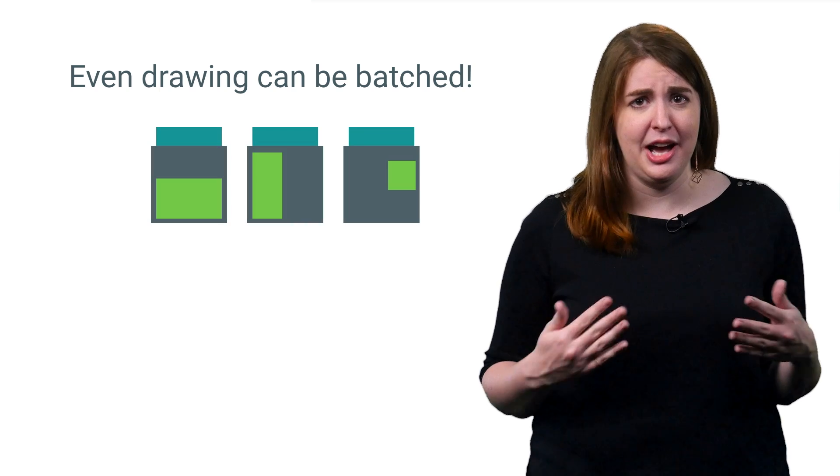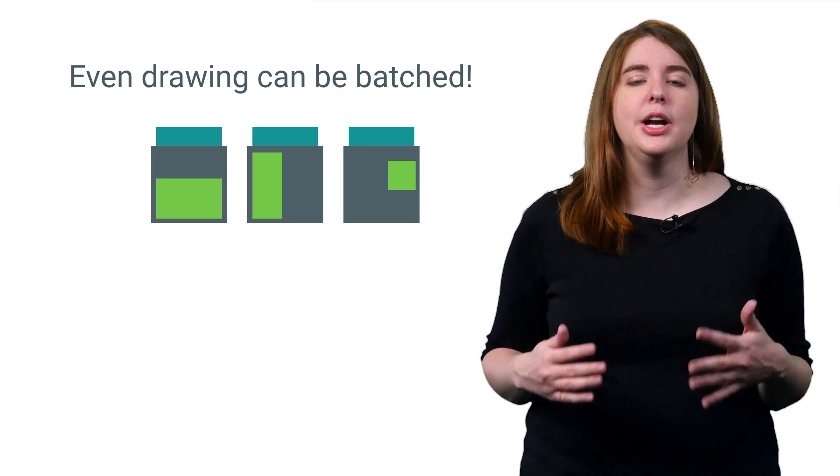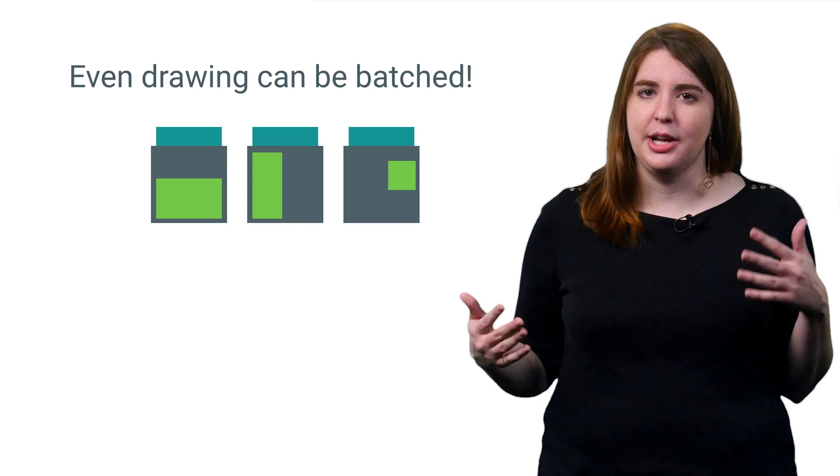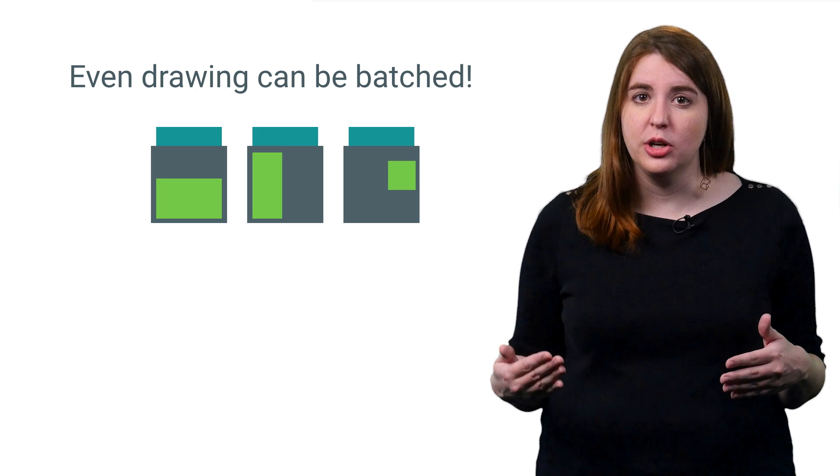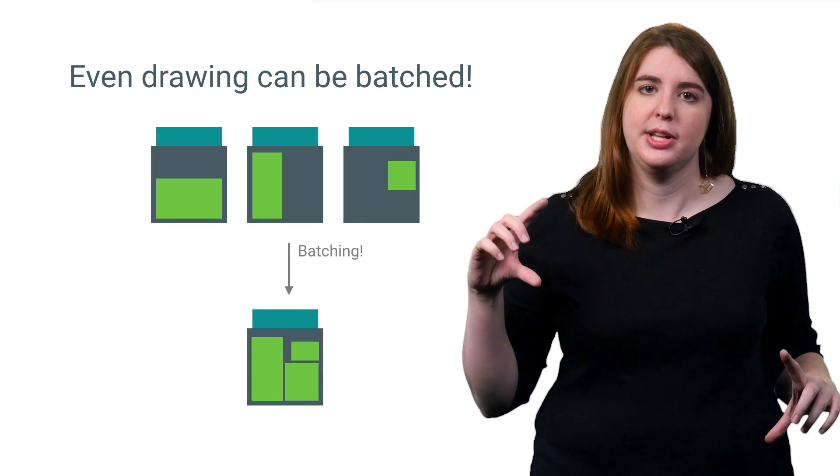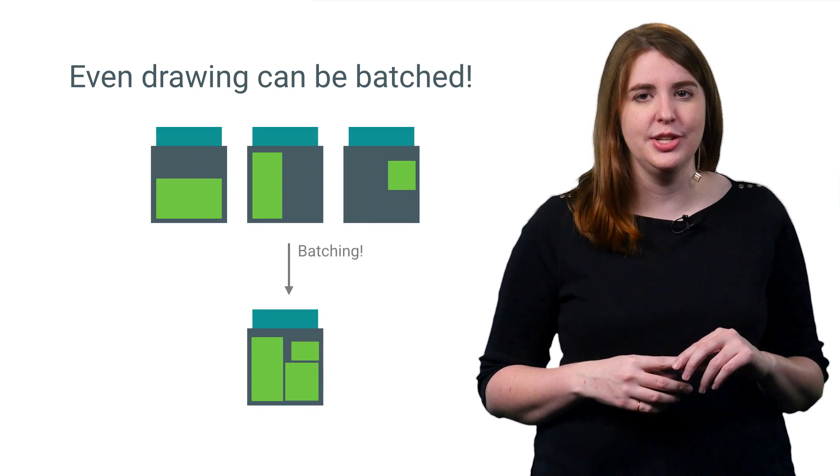But batching is pretty helpful in other situations, too, like rendering custom views. Rather than computing a transform matrix for every item, you could group them together and make small changes to a larger transform matrix, saving you precious resources.